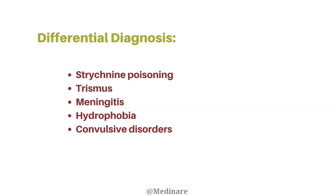Differential diagnoses that can be confused with tetanus include strychnine poisoning, trismus due to other causes, meningitis, hydrophobia (fear of water, mainly due to rabies), and other convulsive disorders where the primary problem is in the CNS.